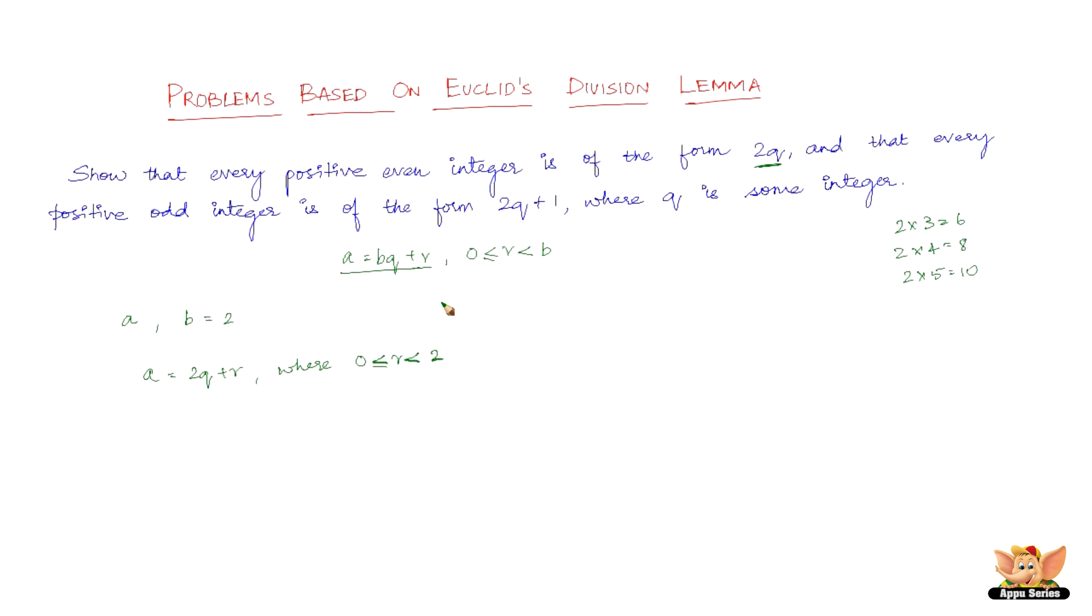So now if we consider this, r can either be equal to 0. So if it is equal to 0, you substitute r as 0, then it's just a equals 2q. Now we have r greater than or equal to 0, so if r is equal to 0, you substitute the value of r in this, you get a equals 2q.